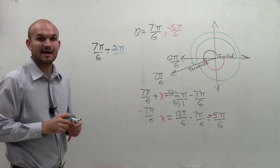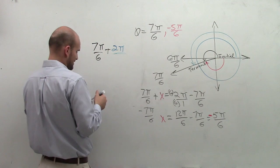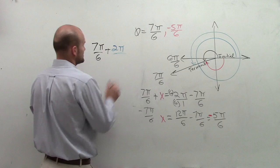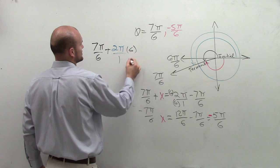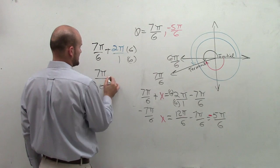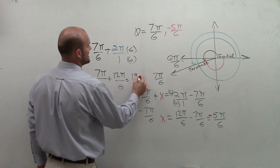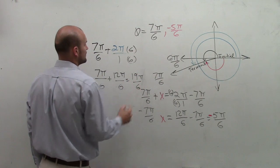That will give me a positive, because I already have a negative. So again, to do this, you got to make sure you get common denominators. So we multiply by 6 over 6. So now I have 7π over 6 plus 12π over 6, and that equals 19π over 6.